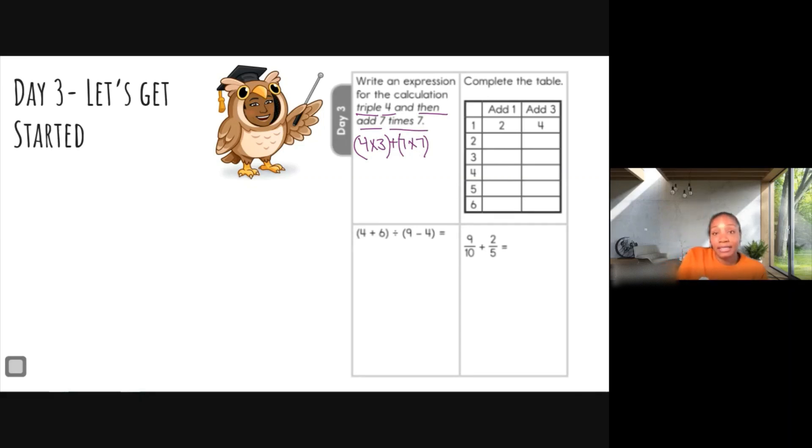Because we do this first, we're going to put parentheses around that and then the seven times seven. That's it. It says just to write an expression. Now if you took it a step further and you solved it, that's absolutely fine. So four times three is twelve plus seven times seven is forty-nine. And we can add over here: forty-nine plus twelve, nine, ten, eleven, carry the one.